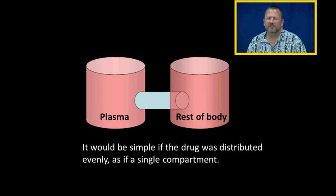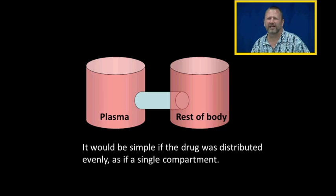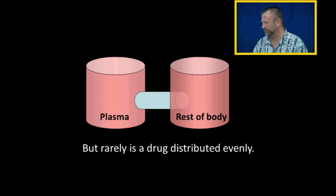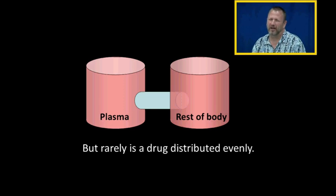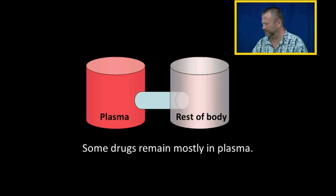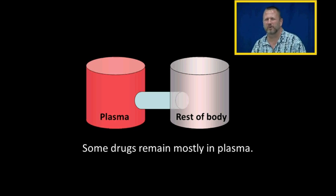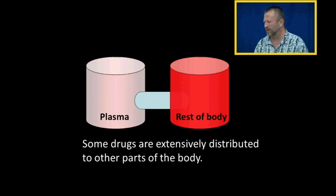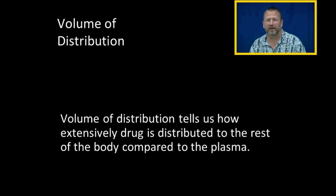It would be very simple if a drug distributed evenly between the plasma compartment and the rest of the body, but that is not the case. Rarely is a drug evenly distributed between the plasma and the rest of the body water. Some drugs remain mostly in the plasma, while others are extensively distributed to other parts of the body. Volume of distribution tells us how extensively a drug is distributed to the rest of the body compared to the plasma.